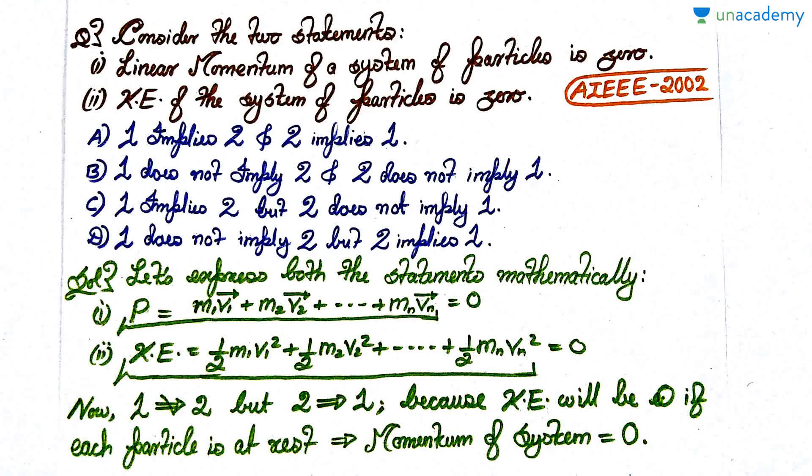Let's see this question, very interesting, very conceptual. It says consider two statements: first, the linear momentum of a system of particles is zero; second assertion or statement is that the kinetic energy of the system of particle is zero. These are two separate cases. What we want to know is which statement implies which one.